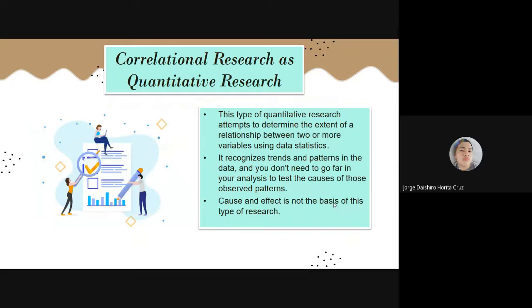Correlational research as quantitative research. This type of quantitative research attempts to determine the extent of a relationship between two or more variables using data statistics. In this type of quantitative research, the research between a series of facts are searched for and interpreted. You recognize trends and patterns in the data, and you don't need to go far in your analysis to test the causes of those observed patterns.